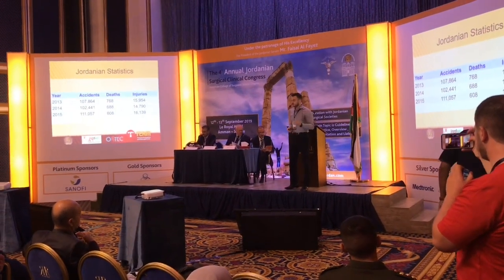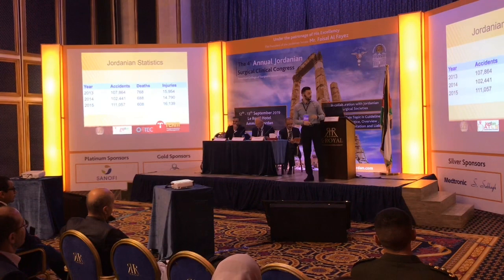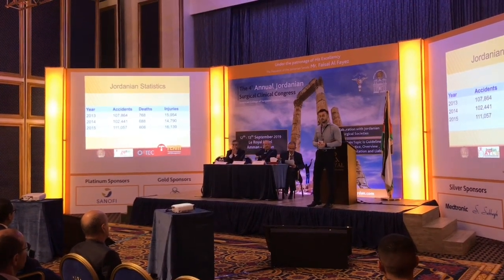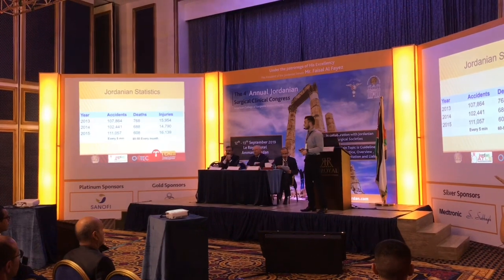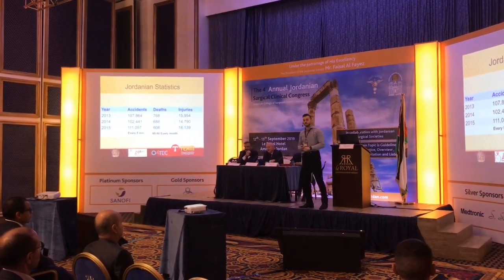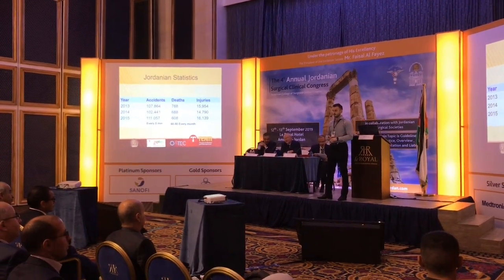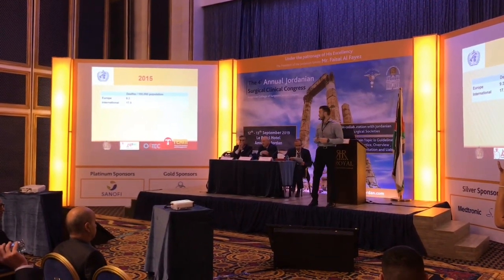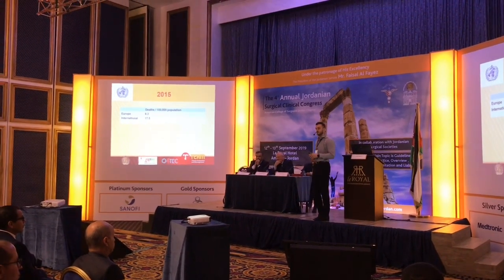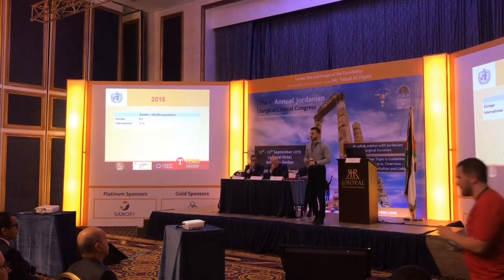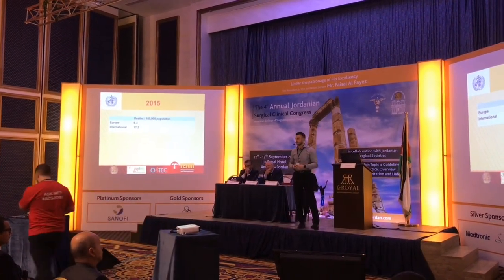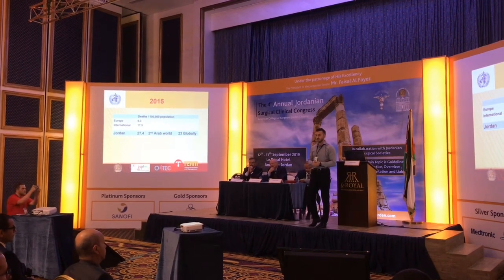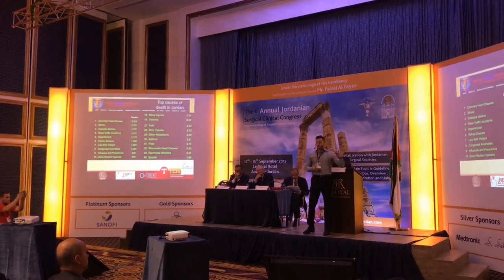Looking at Jordanian statistics from 2013 to 2015, we're having about 600 to 700 deaths per year from road traffic accidents — basically every five minutes we have a crash, and 50 to 60 people are dying. By WHO 2015 data, the death rate per 100,000 population: Europe is 9.3, the international average is about 17, and Jordan is about 27.4 — roughly three times the European rate.